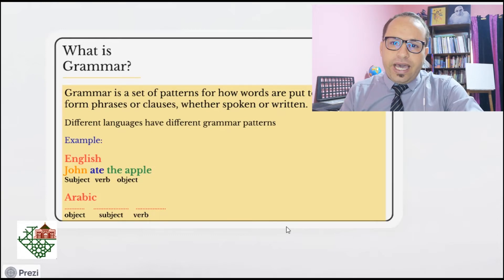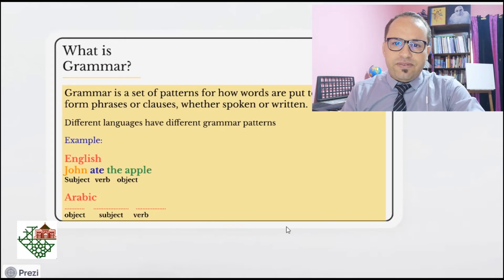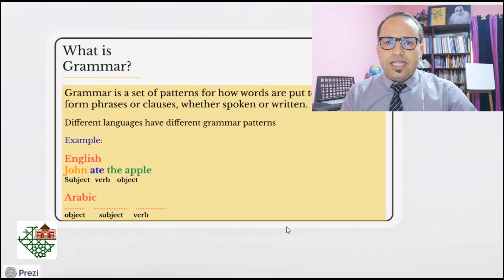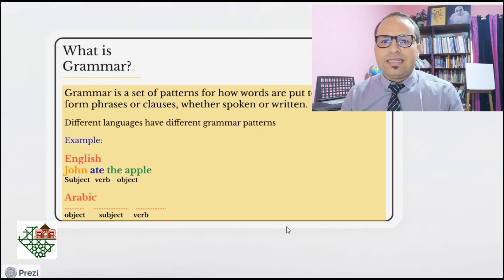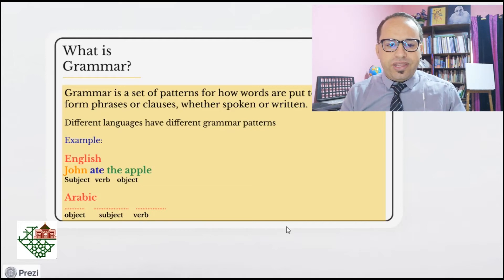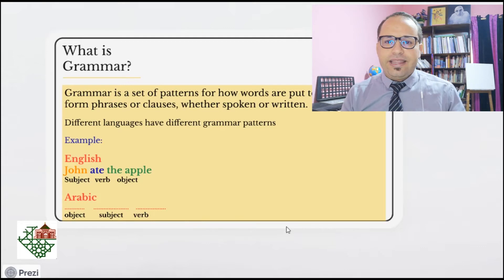Different languages have different grammar patterns, and that goes without saying. If we compare the Arabic language to the English language, we'll find very distinct, very different grammatical patterns. Let's take the simple sentence in both languages. In English, we start with the subject, then the verb, then the object — for example, 'John ate the apple': John is the subject, ate is the verb, the apple is the object.